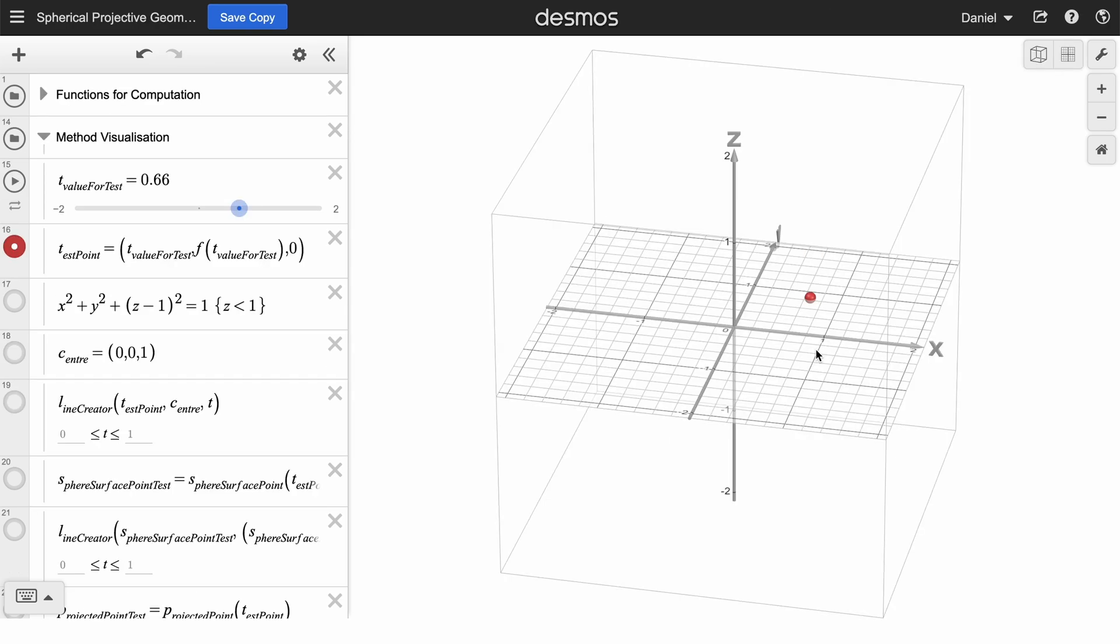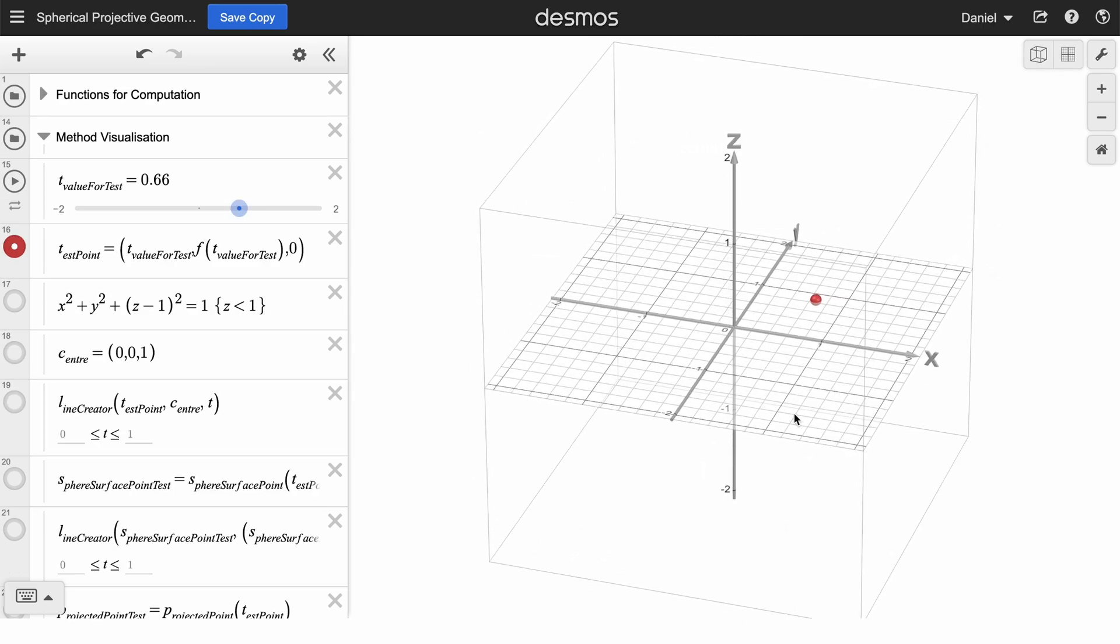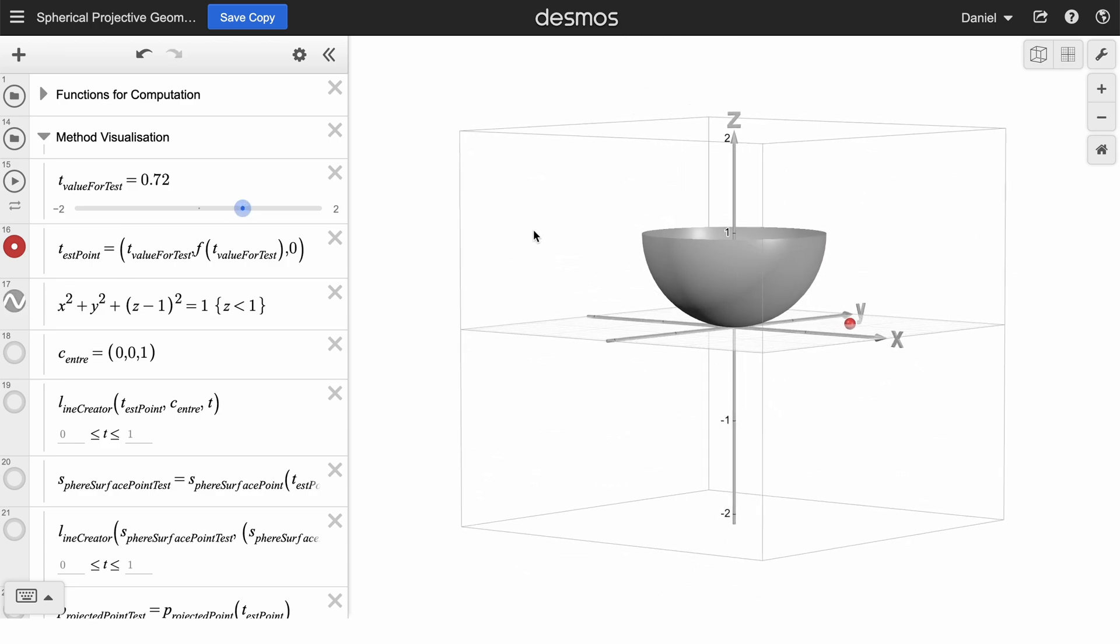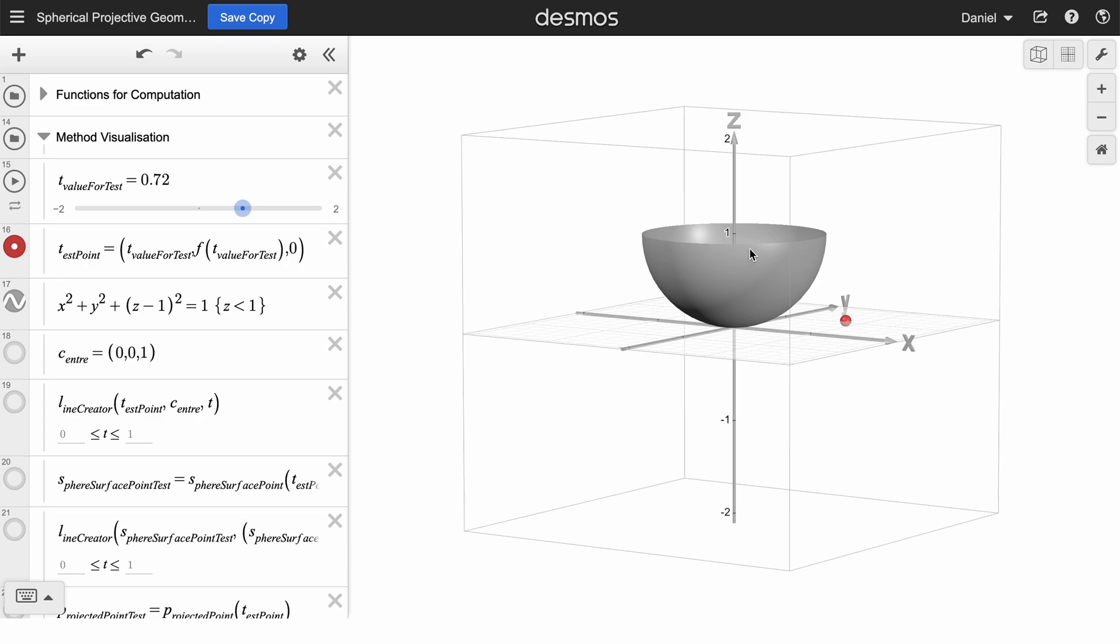I made a separate file in Desmos 3D explaining how this projection function works. It's a function that takes any point in the xy plane and brings it into the unit circle. So first consider this red point, which I can move around on the xy plane as I drag this slider. The way I've done the projection is by imagining a hemisphere sitting on top of the xy plane. It has a radius of 1 and it's centered at the point 001.